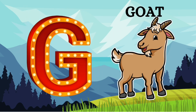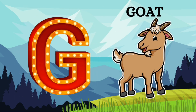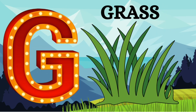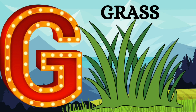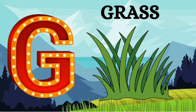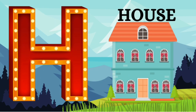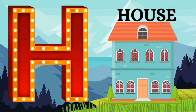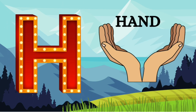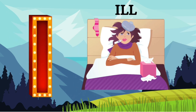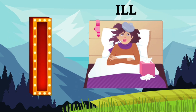G is for Goat. G, G, Goat. G is for Grass. G, G, Grass. H is for House. H, H, House. H is for Hand. H, H, Hand. I is for Ill.